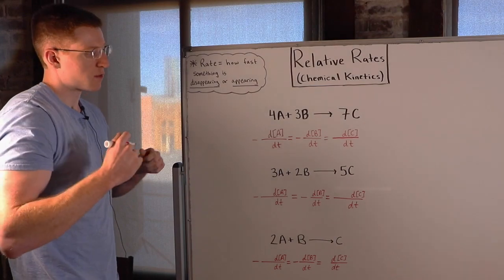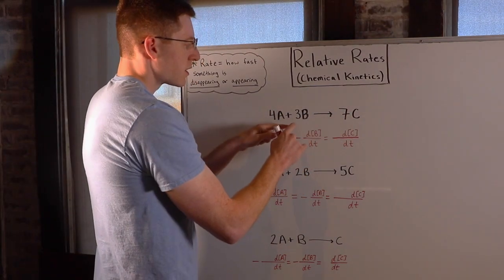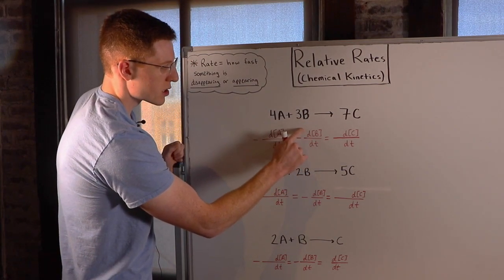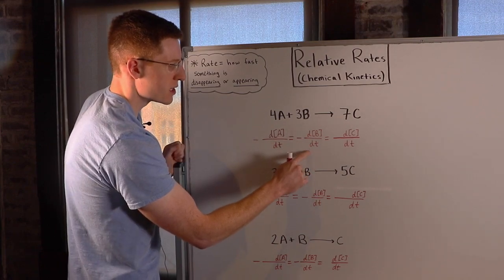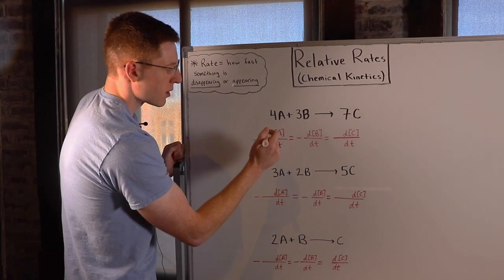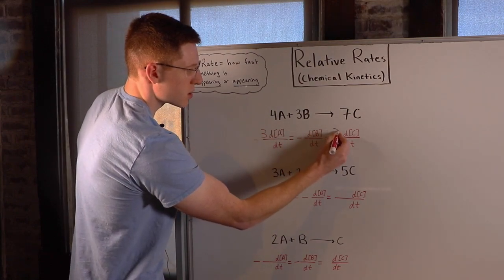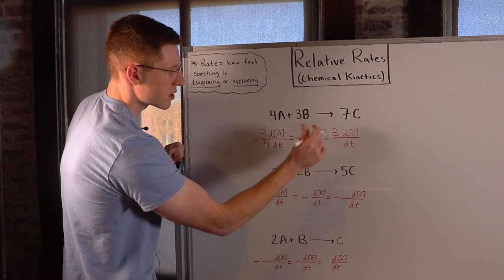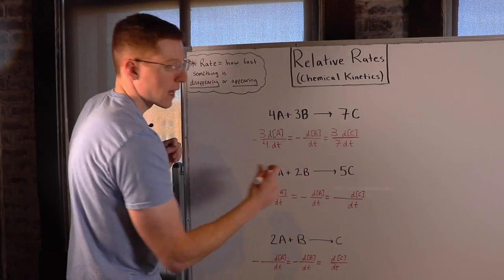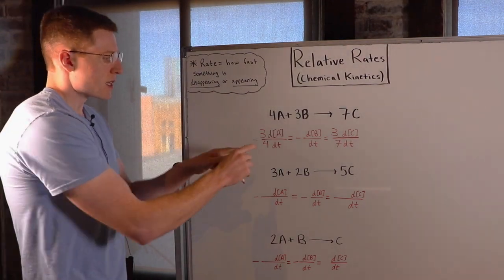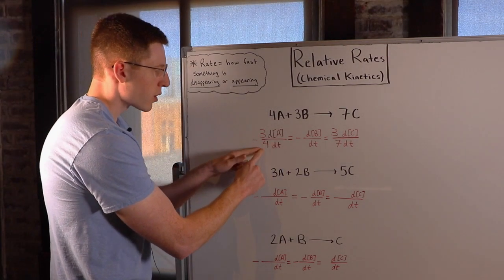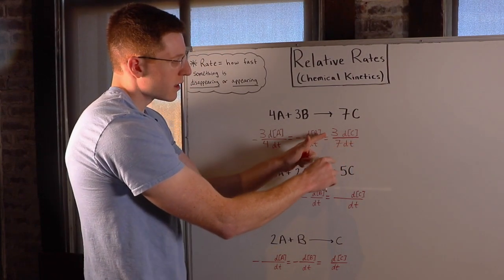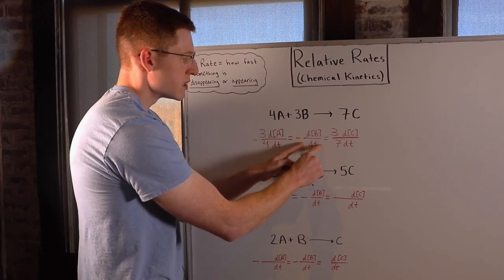To write the relative rates based on coefficients, you take the lowest stoichiometric coefficient — here that's 3 — and set that term equal to 1, so this becomes negative (1/1) dB/dt. Then I take that lowest number (3) and put it in the numerator of the other terms, placing the respective coefficients (4 for A, 7 for C) in their denominators. This means A is disappearing 3/4 as fast as B is disappearing, and C is appearing 3/7 as fast as B is disappearing.